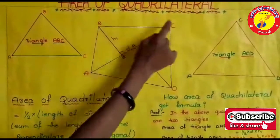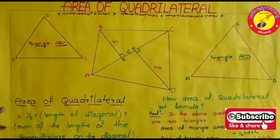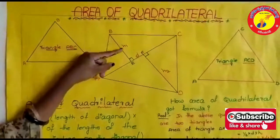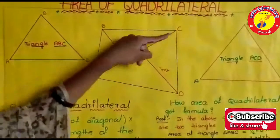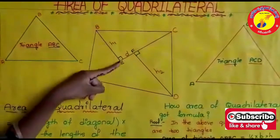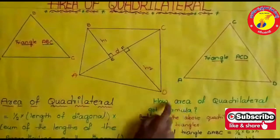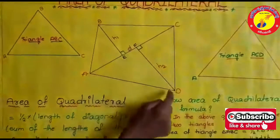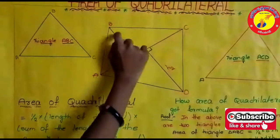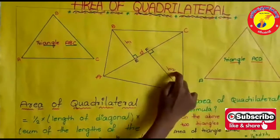Triangle ABC and triangle ACD. Draw a perpendicular line from point B. Draw a perpendicular line from point D. This is height 1 and this is height 2.